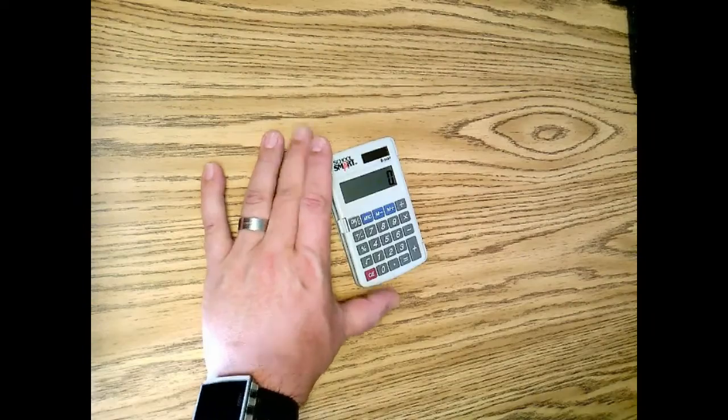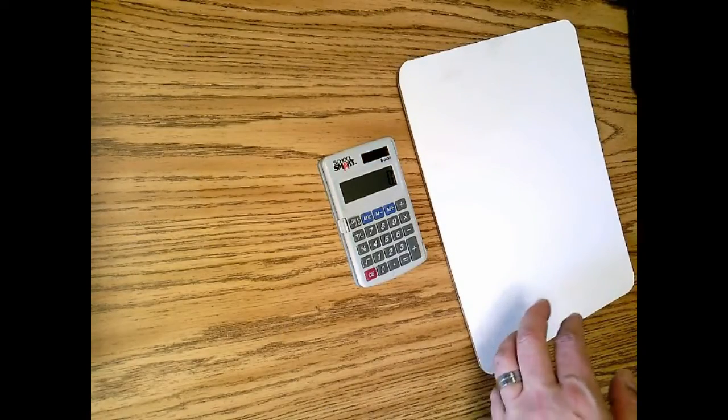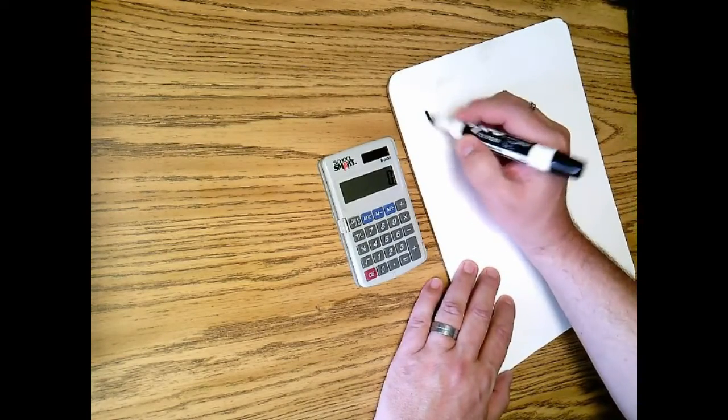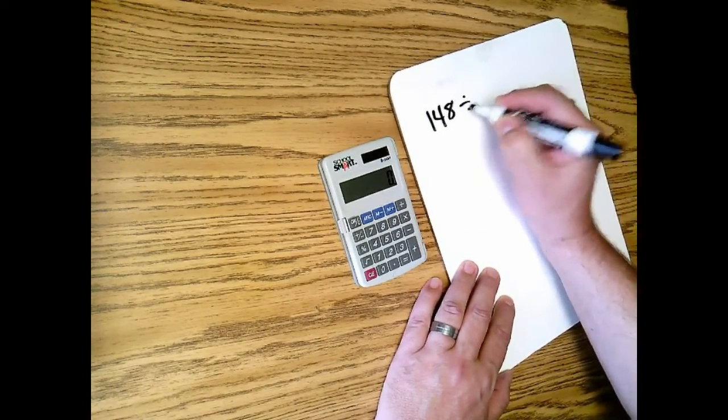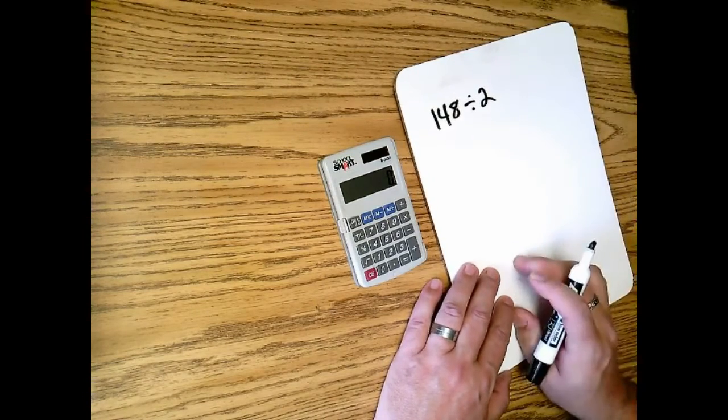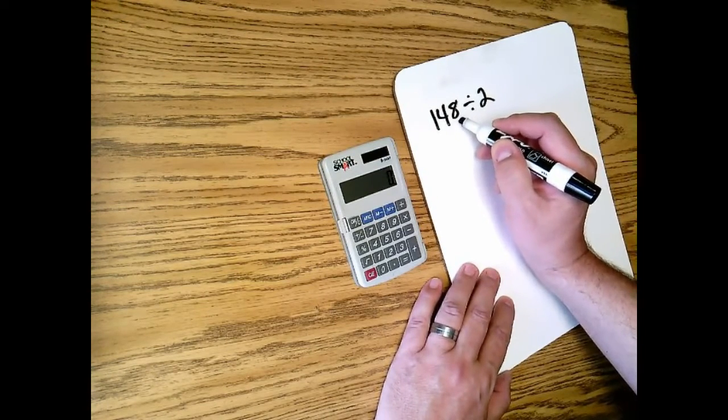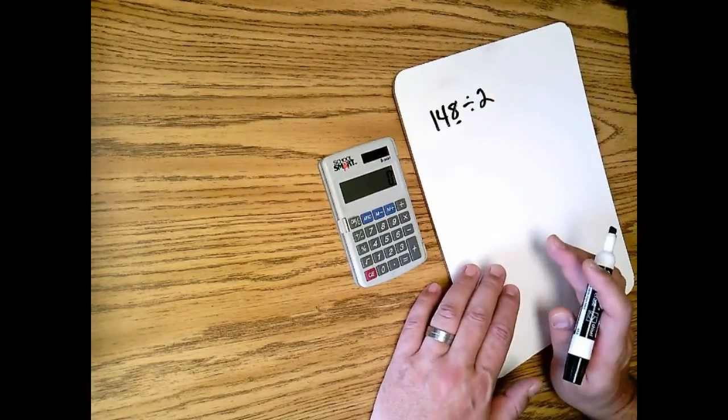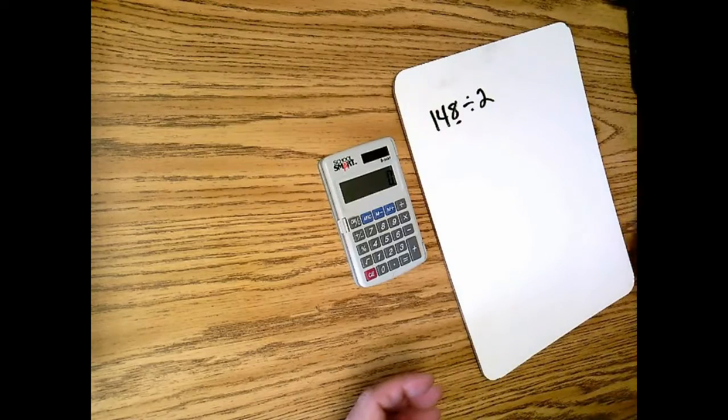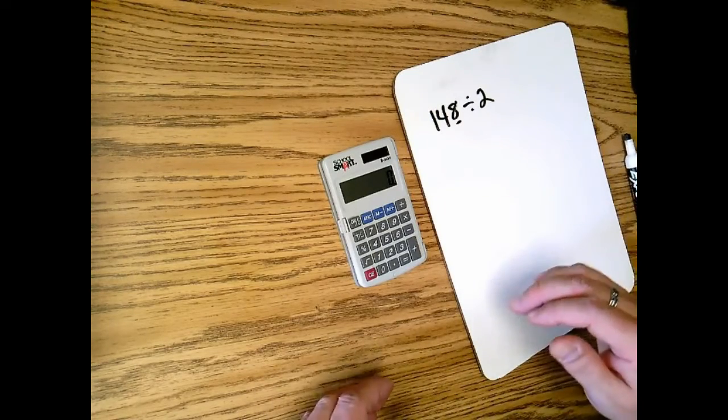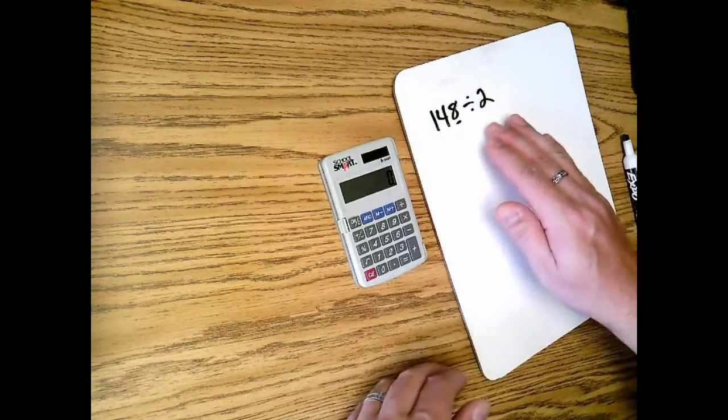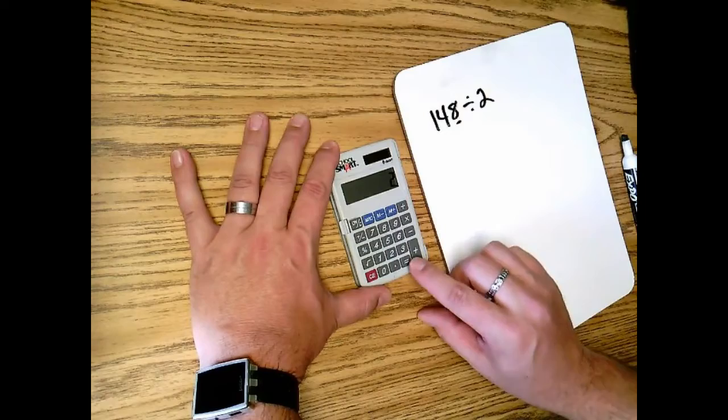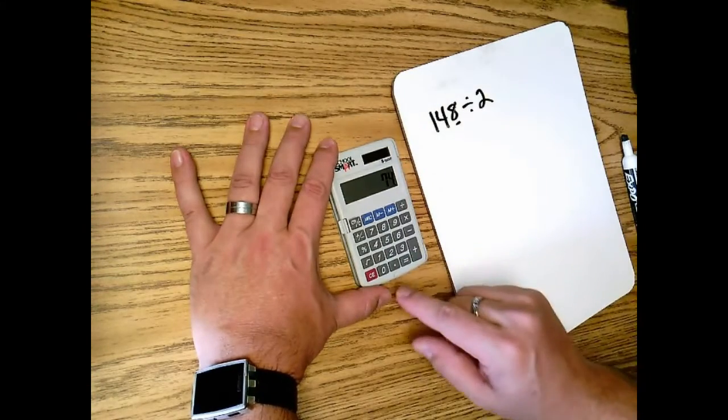And if I have a division problem, that's one thing that I've noticed that some people have trouble with. If I had 148 divided by 2, now of course I know my divisibility rules, and if this whole number ends in a digit that is even, I know that it will equally divide. But what I see a lot of people enter in is when it's like this, they understand that they enter 148 divided by 2 and enter, and of course 74 is the quotient.